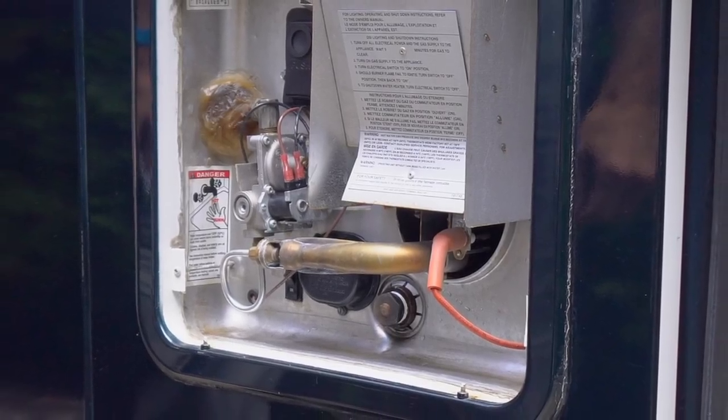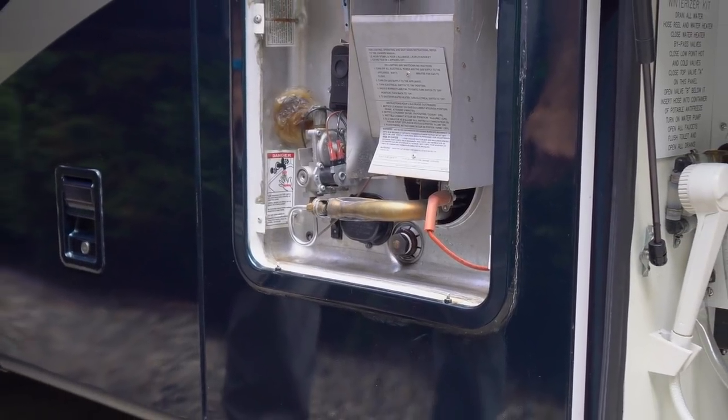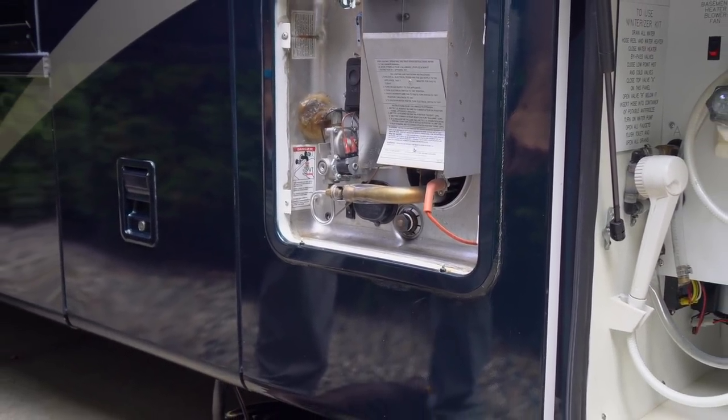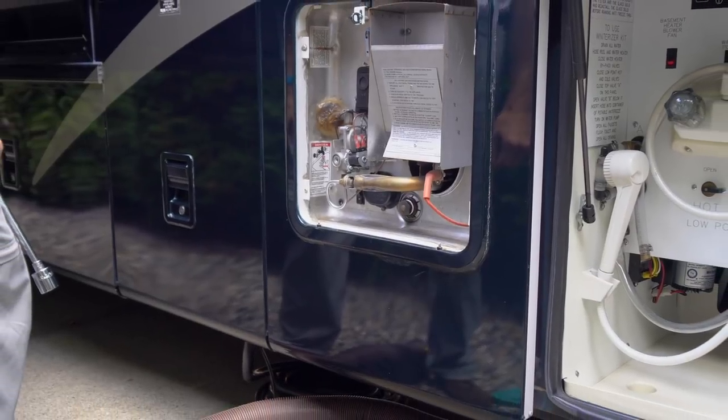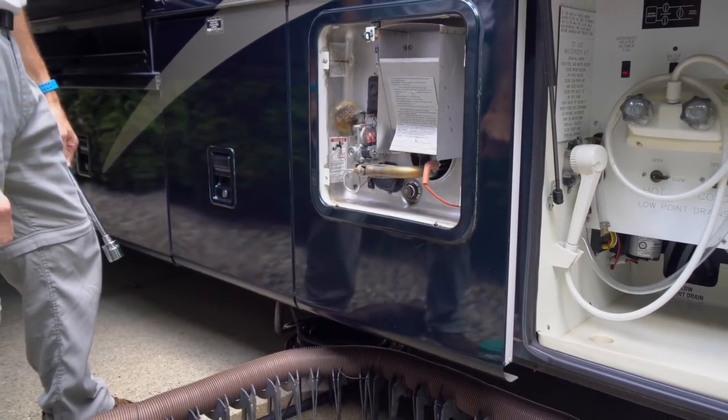First, let's get the tank opened up so we can do an initial boroscope inspection to see what effect one year's use has had on the condition of the tank. As usual, we turned the heater off the night before so the water would cool down before we drain it.